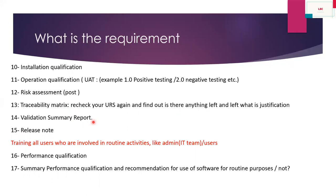After the traceability matrix, prepare the Validation Summary Report. This report covers everything from the beginning of the change control up to the final release note. Auditors specifically ask about the Validation Summary Report because they want to see your entire approach in a single document — so this is a very important document. Then provide training to all users involved in routine activity, such as the admin team and user team. Finally, perform Performance Qualification in your production environment, which gives a summary recommendation on whether the software is ready for routine use.